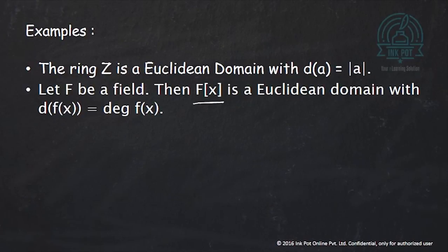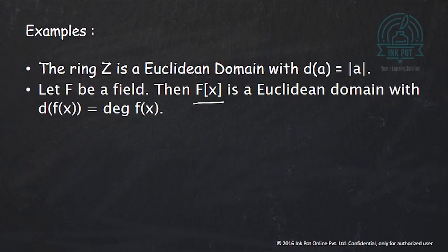Let us look at examples. The first example is the ring of integers ℤ — it is a Euclidean domain with the function d defined as d(a) equals |a|. In the next example, if F is a field, then the polynomial ring F[x], which is an integral domain, is a Euclidean domain where the function d is defined as d(f(x)) equals the degree of f(x).